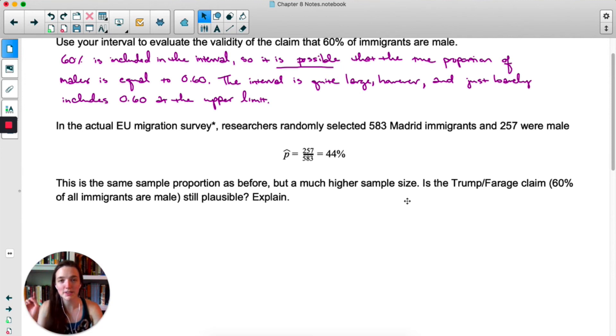What I'd like you to do is skip the state and the plan steps, calculate the new standard deviation for this new scenario, and then recalculate the interval. Do that, and then try to answer this question about the claim one more time.